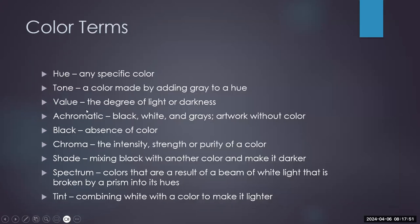Here are more specific color definitions: Hue is any specific color. Tone is a color made by adding different amounts of gray, making it lighter or darker. Value is the degree of light or darkness. Achromatic refers to black, white, and gray — artwork with no color. Black is the absence of color. Chroma is the intensity, strength, or purity of a color. Shade is mixing black with another color to make it darker. Spectrum is the colors resulting from white light broken by a prism. Tint is combining white with a color to make it lighter.